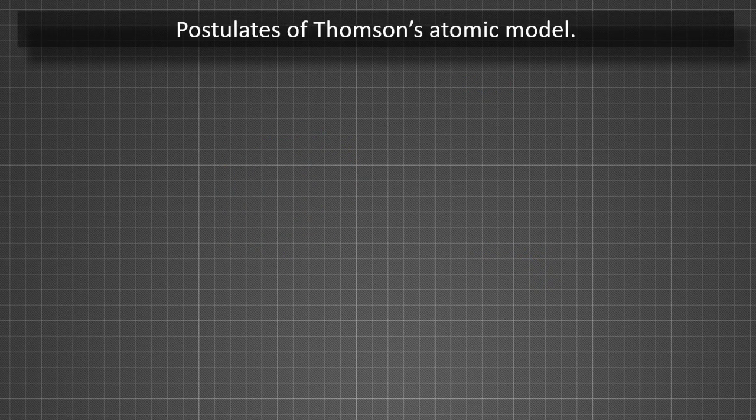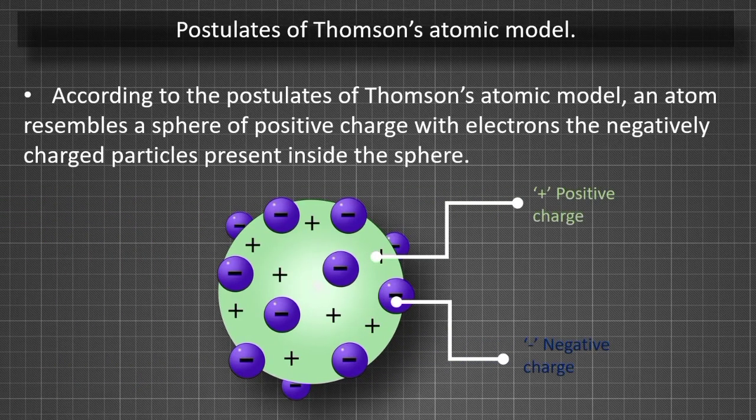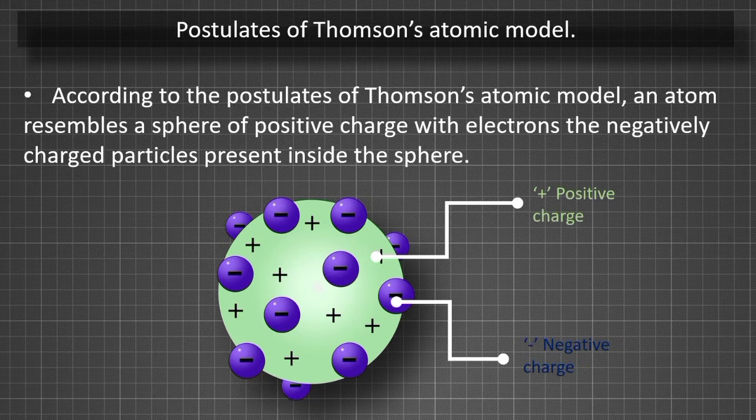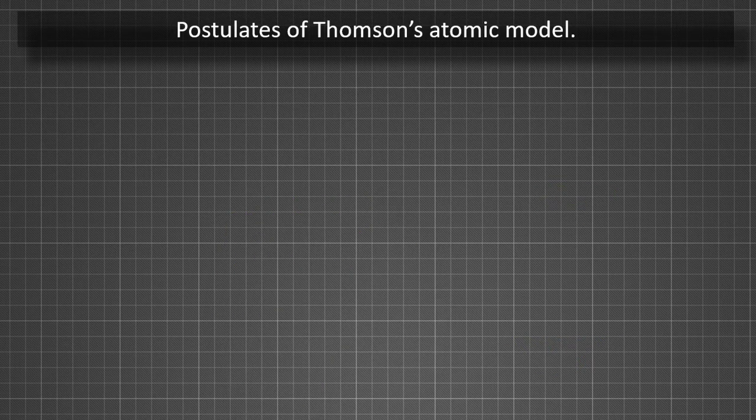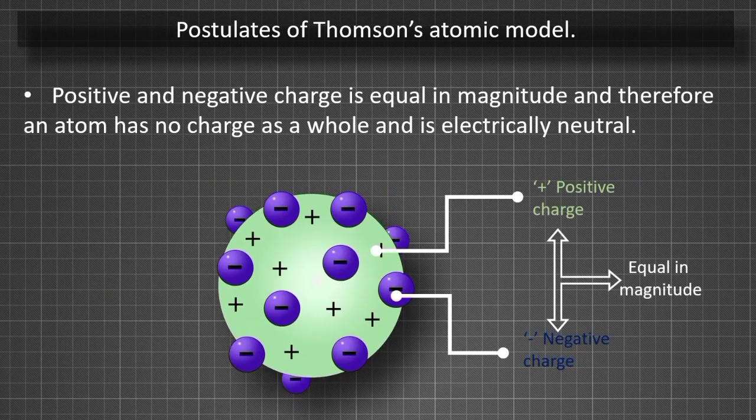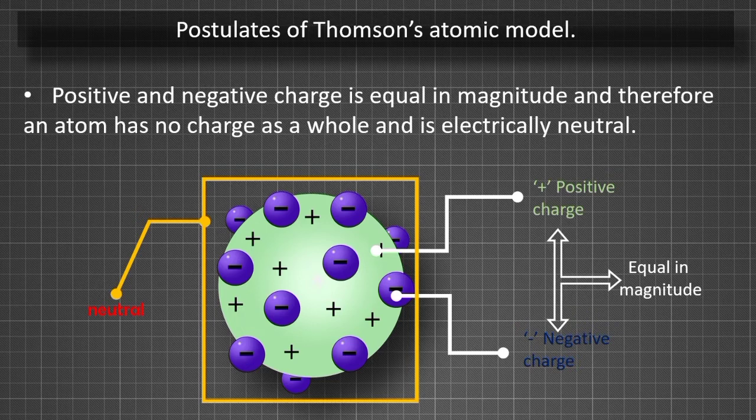Postulates of Thompson's Atomic Model. According to the postulates, an atom resembles a sphere of positive charge with electrons, negatively charged particles, present inside the sphere. The positive and negative charge is equal in magnitude, and therefore an atom has no charge as a whole and is electrically neutral.